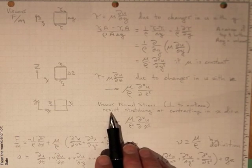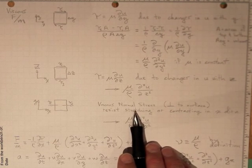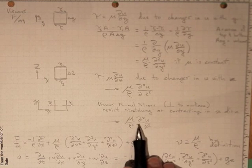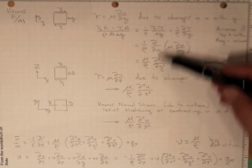and they come about to resist the stretching or contracting in the x direction. And that leads us to a mu over rho di 2u di x squared term. So now we've got all three terms.